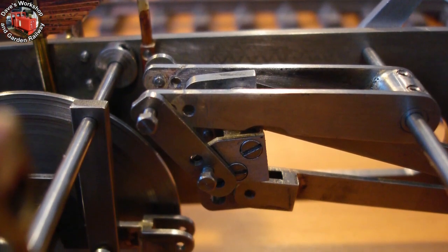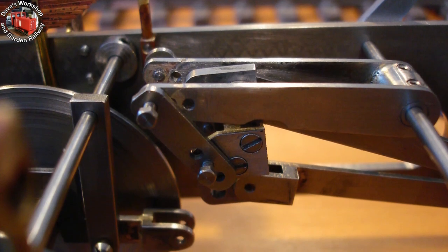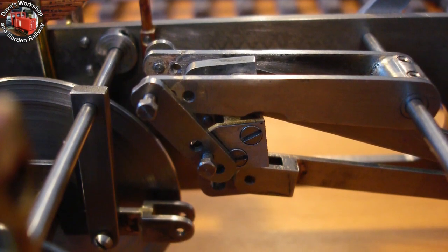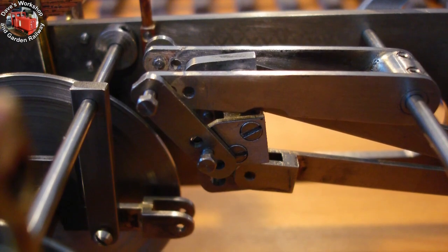The longer lifting arm is so that I can raise the link much higher, keeping it within the frames at all times. With the old setup the link was nearly at rail height, in the lowered position.